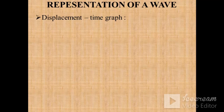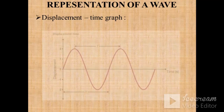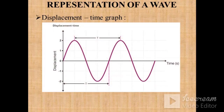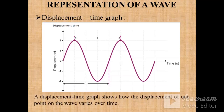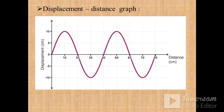A wave can be represented by two methods. First is the displacement-time graph, which shows how the displacement of one particle on the wave varies with time — if you want to see the displacement of a single particle with respect to time. Second is the displacement-distance graph, where on the y-axis displacement is shown and on the x-axis distance is represented — this shows the movement of all particles of the wave. This is how we can represent the sound wave.